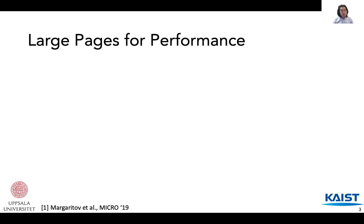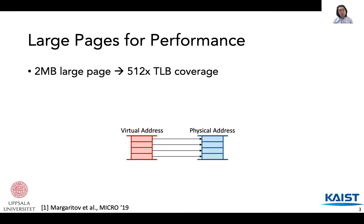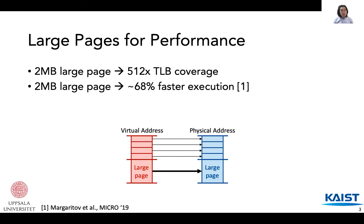Let's start with the performance. TLB misses hurt performance. Large pages increase the TLB coverage by 512 times, aiming to improve performance. A single address mapping can represent many regular mappings. This increase in TLB coverage results in fewer TLB misses, leading to performance improvements. Prior work has found up to 68% performance improvement by using large pages.